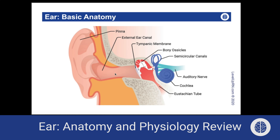The tympanic membrane separates the external ear from the middle ear. In the middle ear, we have the bony ossicles, which include the malleus, incus, and stapes. We also have the eustachian tube, which connects to the nasopharynx and helps to equalize air pressure in the middle ear. When you hear the term otitis media, that means we have a middle ear infection — it's pretty common in children. With a respiratory infection, we end up with inflammation and congestion, which can lead to obstruction of the eustachian tube, causing accumulation of fluid in the middle ear and leading to infection.